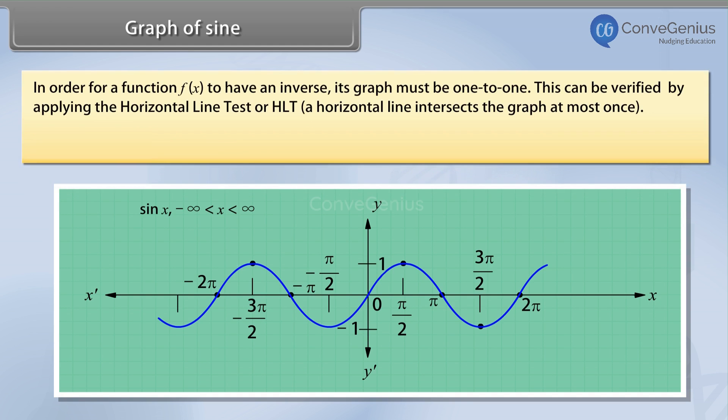In order for a function F of X to have an inverse, its graph must be one to one. This can be verified by applying the horizontal line test or HLT. A horizontal line intersects the graph at most once. Clearly, the graph of sine X fails this test.